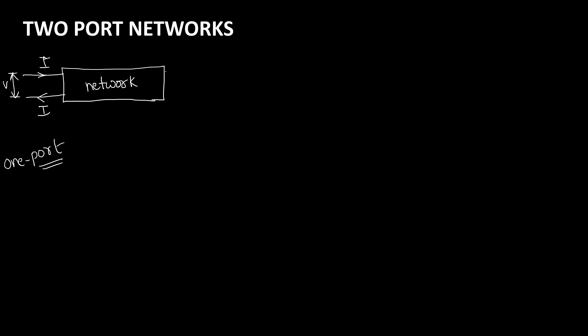Similarly, if we have one more pair of terminals at which current is entering and leaving, this is one more port. Now this network is called a two-port network, and we can even have the voltage there. Like that, you can have three-port networks, four-port networks, or n number of port networks.